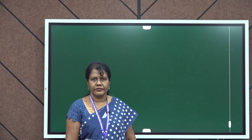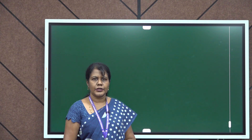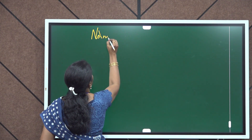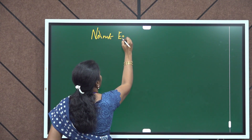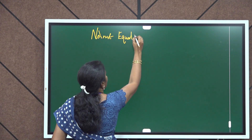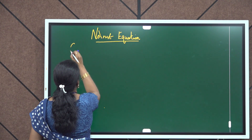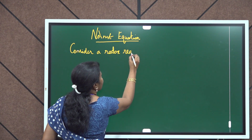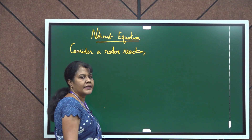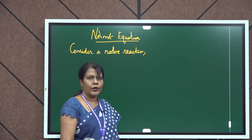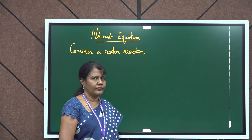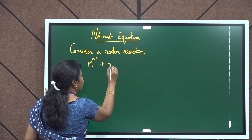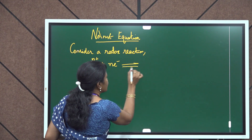The Nernst equation relates electrode potential with standard electrode potential and concentration of the solution. To start with, let us consider a redox reaction — a reaction in which both oxidation and reduction occur simultaneously. As we all know, oxidation is loss of electrons and reduction is gain of electrons. I am going to write the redox reaction as: M^(N+) + N electrons → M.